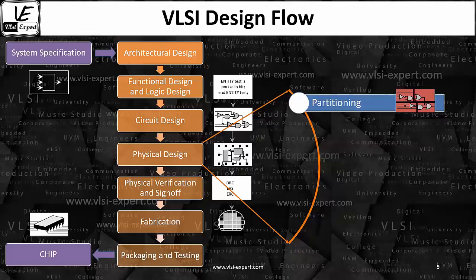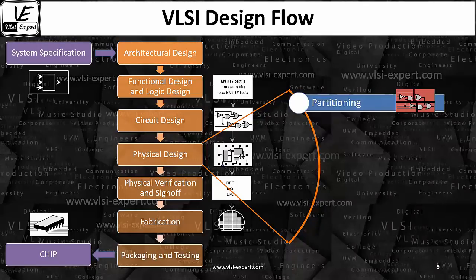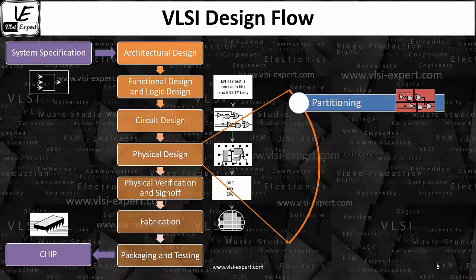Nowadays we are doing partitioning at the RTL level also. It's not like partitioning is done only in physical design. As a physical designer, you can ask: why can't we do this partitioning at the RTL level itself? In place of writing a single RTL for a complete design, why can't the RTL designer write multiple RTLs? If they write multiple RTLs, it can make life very easy — I'm not supposed to partition the design at this particular stage.